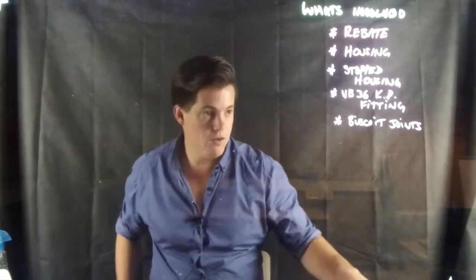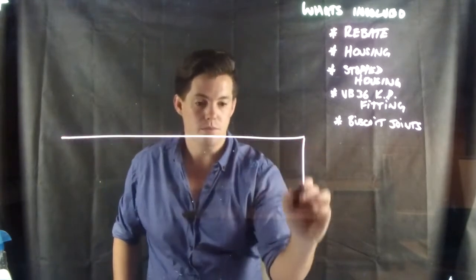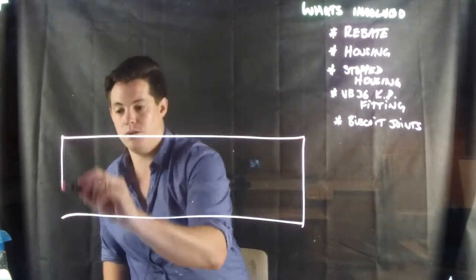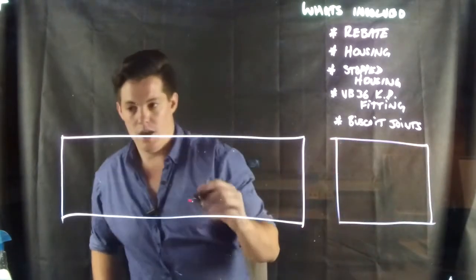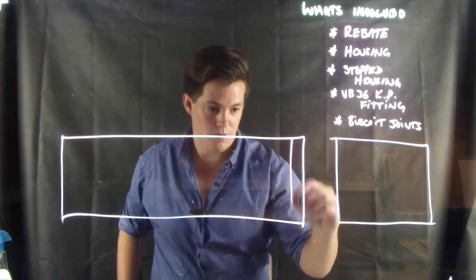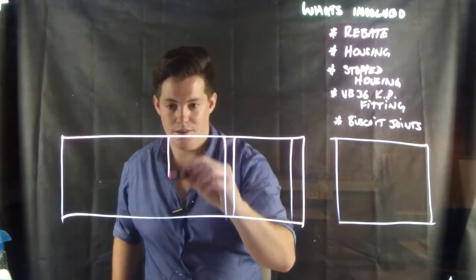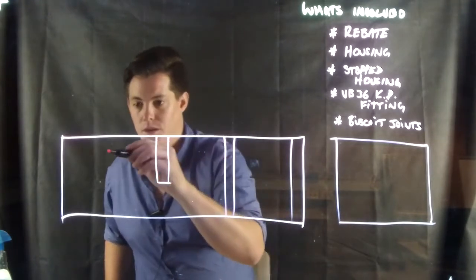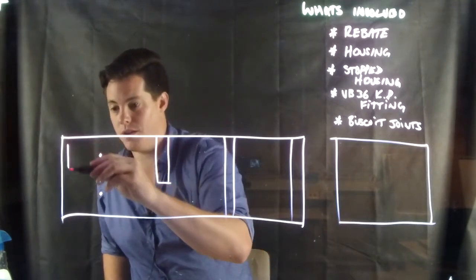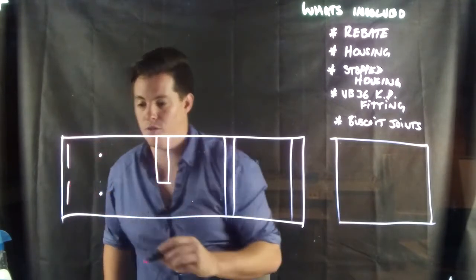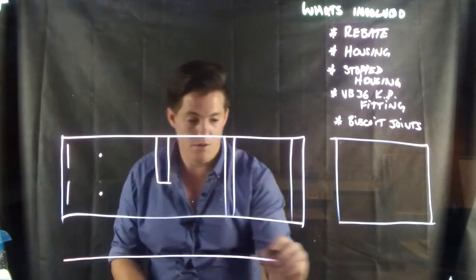So the first thing I'm going to do is I'm going to draw up what the joints are going to look like. So if this is our board here, and I'll also do the small board there, we're going to have obviously a rebate joint there, a housing joint, a stopped housing joint, we're going to have two holes through it for the VB-36s, and we're going to cut in there two slots for our biscuit joints.